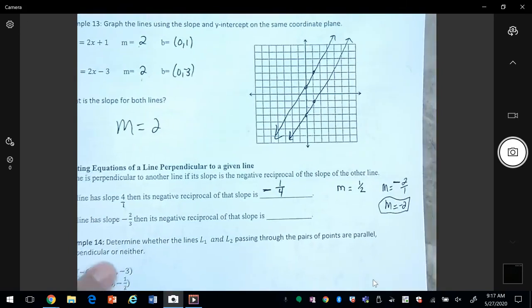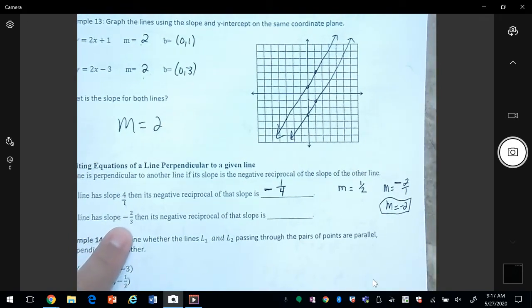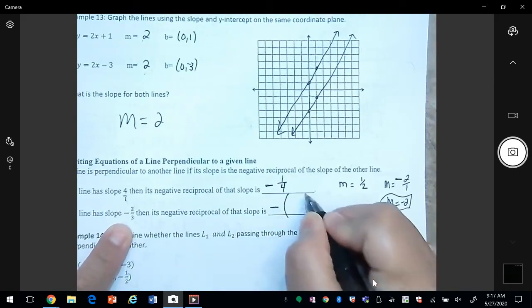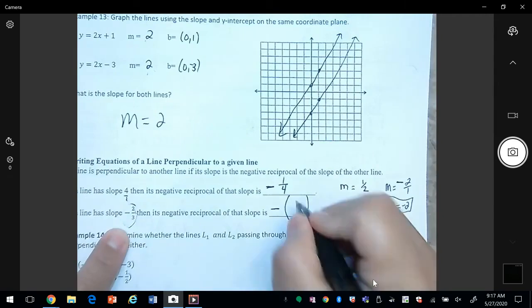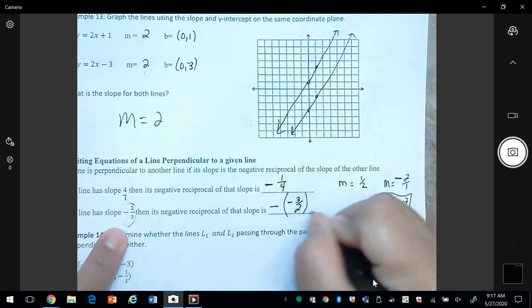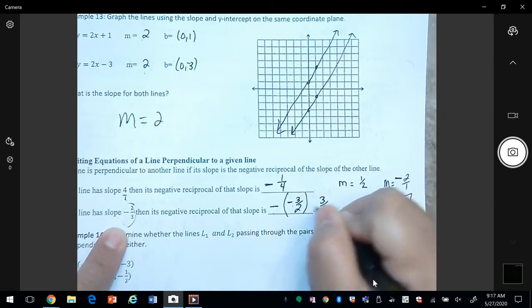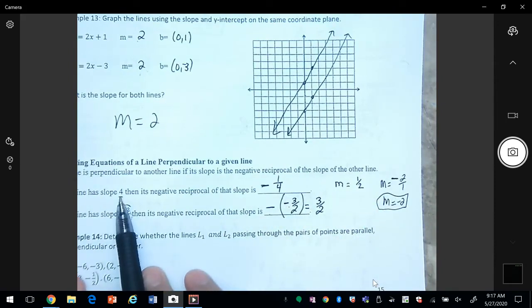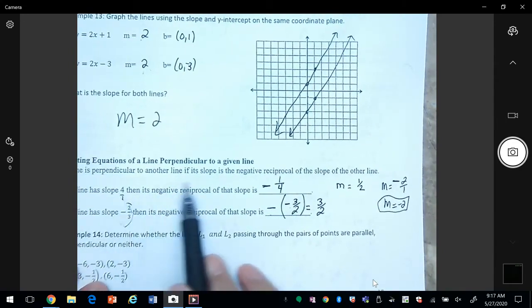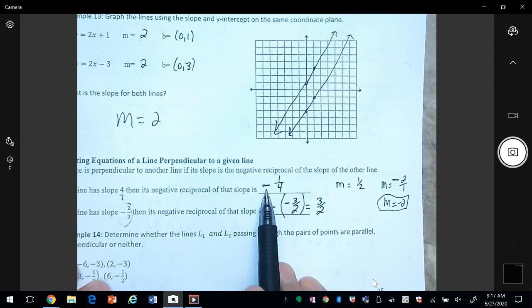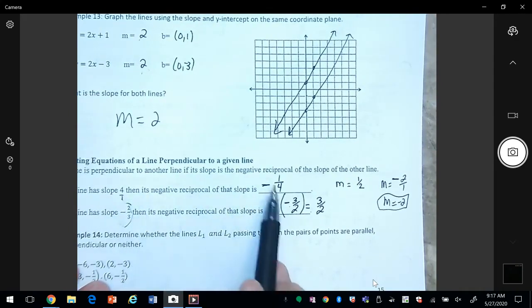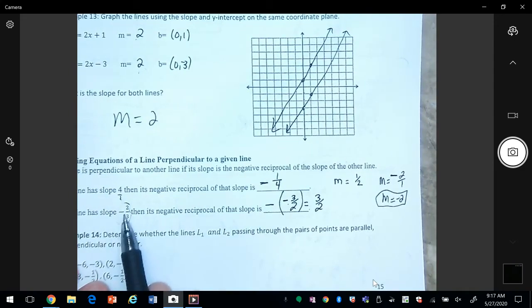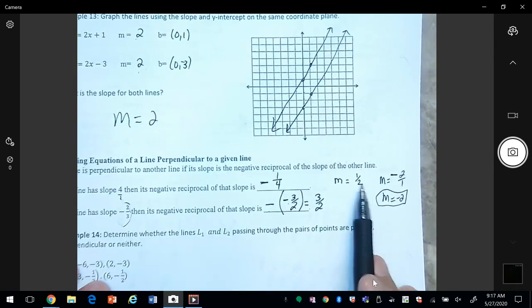If a line has slope negative two thirds, then we write the negative, the reciprocal of this number is going to be negative three halves. So negative negative makes it positive, three halves. So in reality, what's happening here is you can see if you start with a positive, then the perpendicular line will end up with a negative number, and then you take the reciprocal, so you're flipping that fraction. So here I started with a negative two thirds and I ended up with a positive three halves. I started with a positive half and I ended up with a negative two.